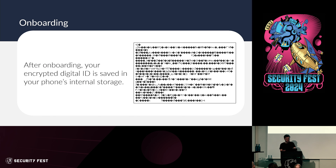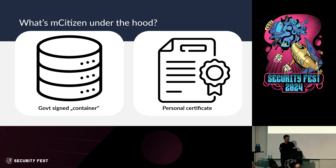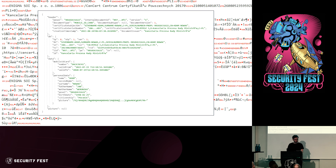Once that's finished, your ID is stored encrypted on your device's local storage with a key stored in a secure element, either on iOS or Android — you cannot easily access it. Let's try to break that encryption. Technically speaking, it's something called a government site container — a JSON blob containing all your data: name, surname, photo, ID number, social security number. You also have a personal certificate which you can use to sign data and prove you are in fact you.